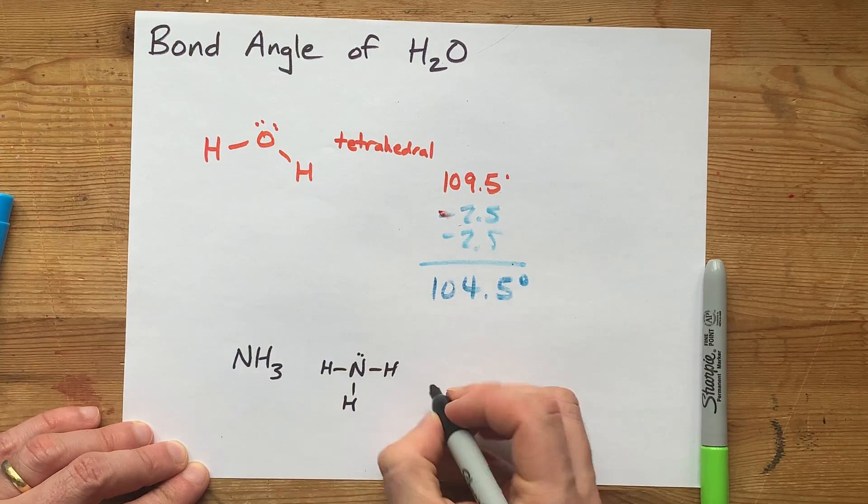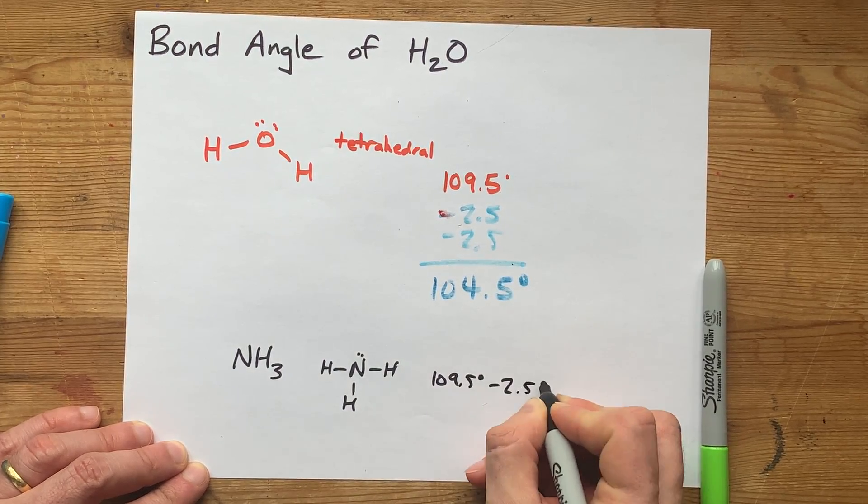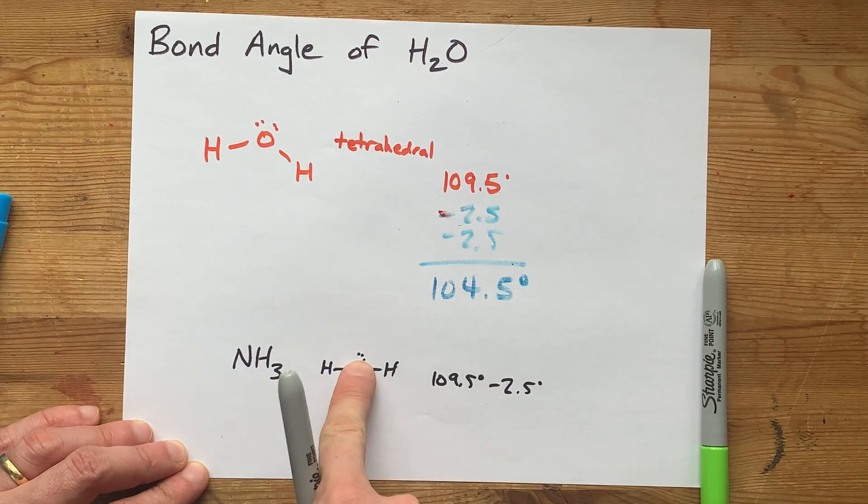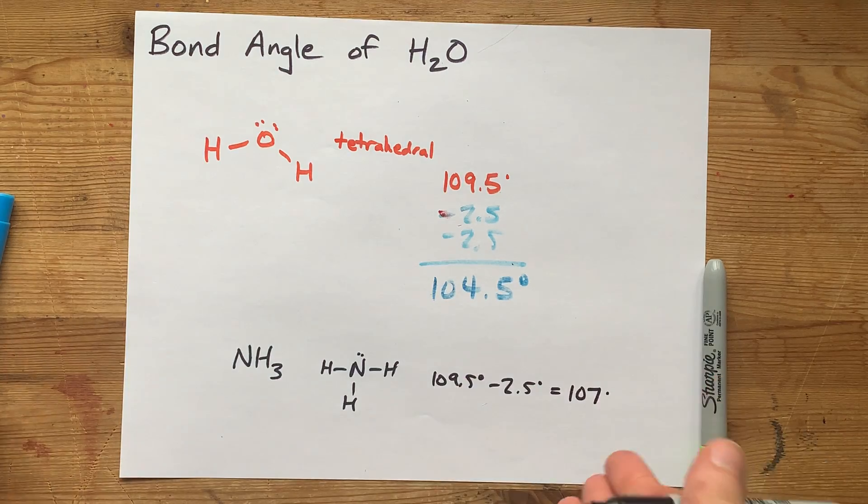one, two, three, four. And I guess that it's 109.5, but I'd subtract two and a half degrees because there's one lone pair on the N. I would guess that the bond angle is 107.